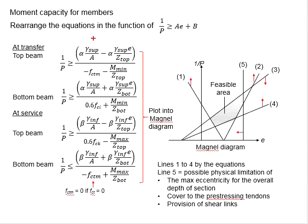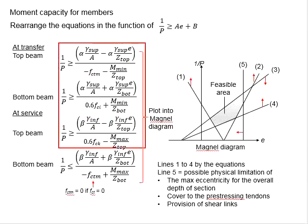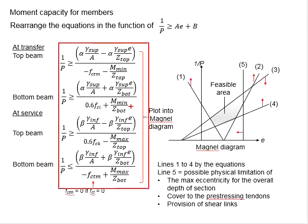You know the A and Z top and Z bottom. These are the geometrical properties of the section. And you know the moment minimum and moment maximum. These are the loading acting on the member.